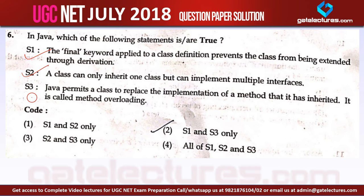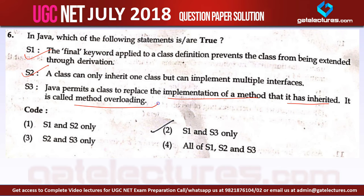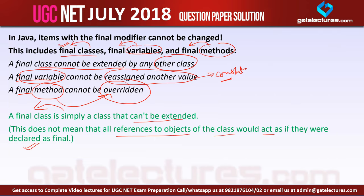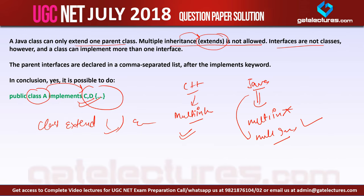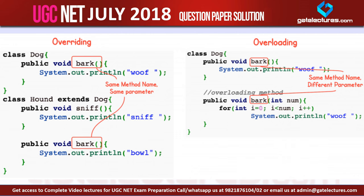Now let us look at statement number 3. It says Java permits a class to replace the implementation of a method that it has inherited, and it is called method overriding. Now this is wrong, because they are asking a simple difference between method overloading and method overriding.